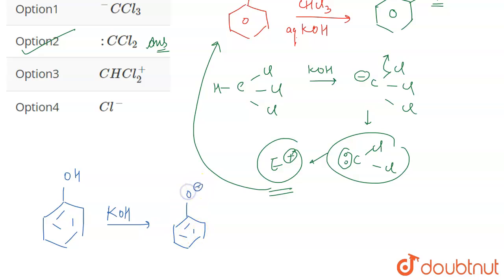O negative and then the electrophile that we have which is CCl2, this carbon attacks on it and this electron shifts here.